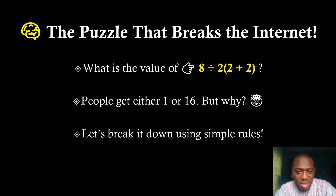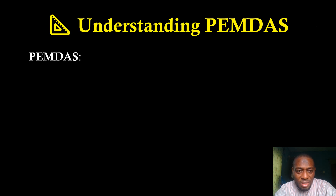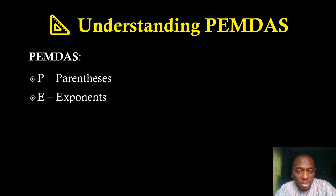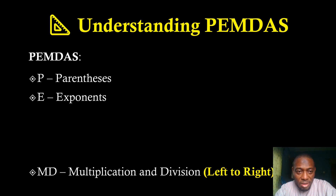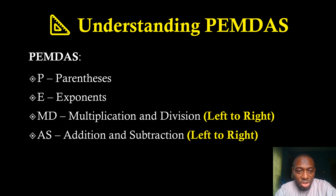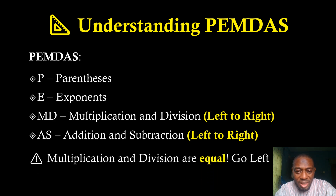We are going to use the order of operations rule. It states that operations in parentheses come first. Next, you do the exponents, then multiplication and division — these are done from left to right. Then you do addition and subtraction, also from left to right. Multiplication and division are equal in hierarchy, so you always go from left to right.